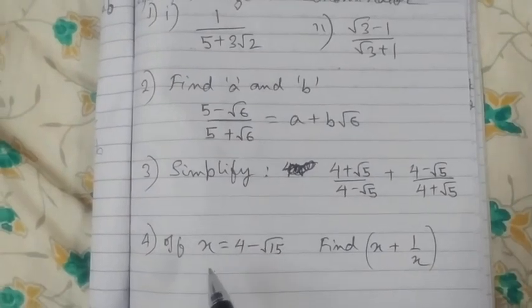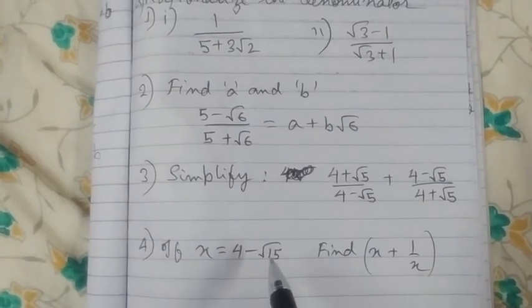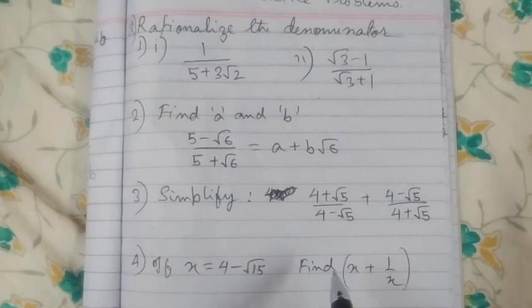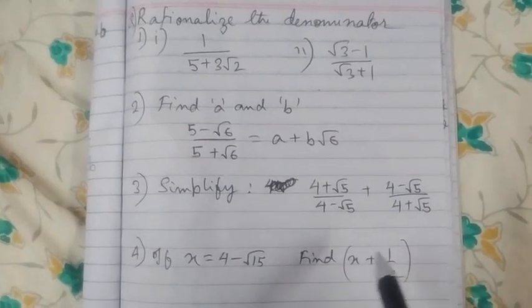We have to simplify this whole thing, and here it is: x is equal to 4 minus root 15. Find x plus 1 by root x, 1 by x, x plus 1 by x.